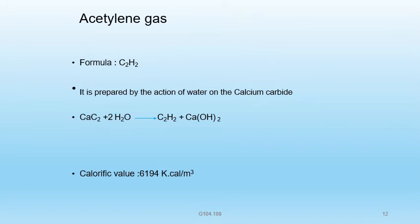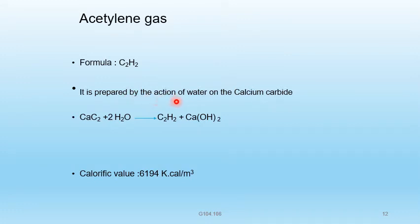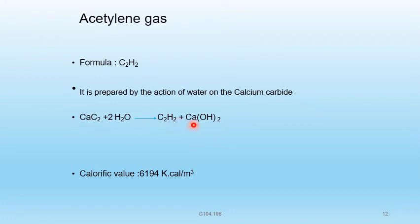Acetylene gas formula is C2H2. It is prepared by the action of water on calcium carbide (CaC2). The chemical reaction is: CaC2 + 2H2O → C2H2 + Ca(OH)2.